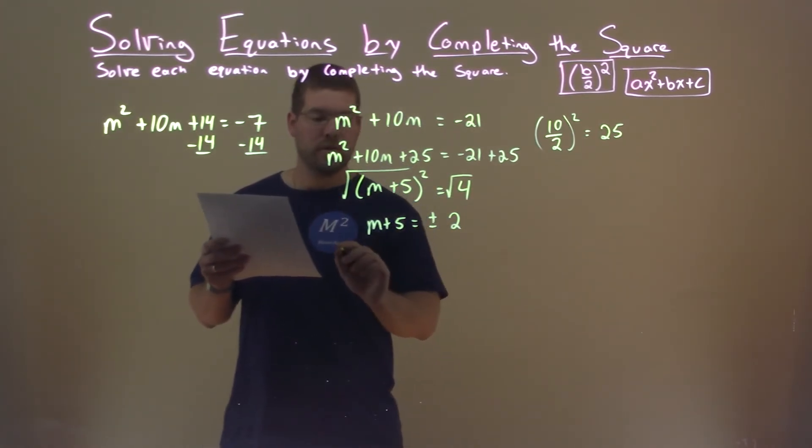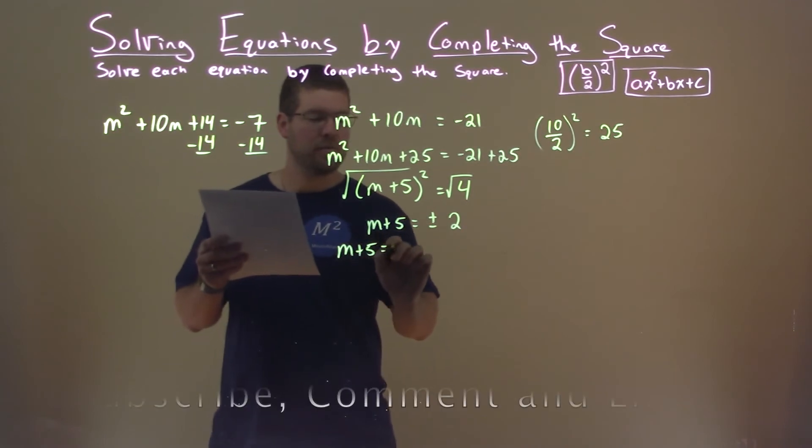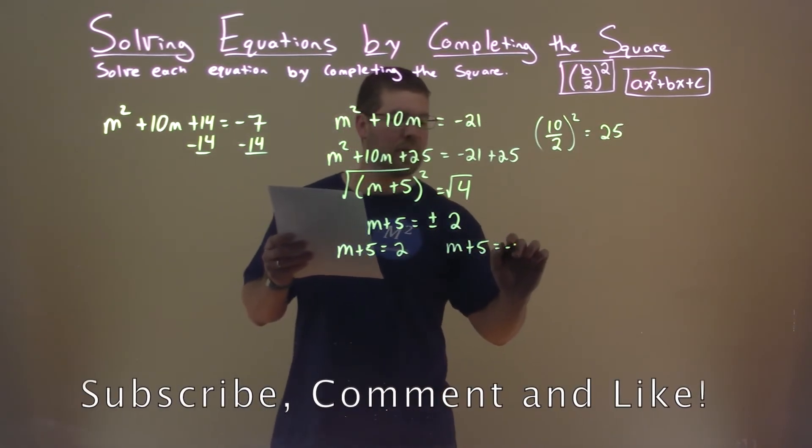We now can write this as two equations: m plus 5 equals a positive 2, and m plus 5 equals a negative 2.